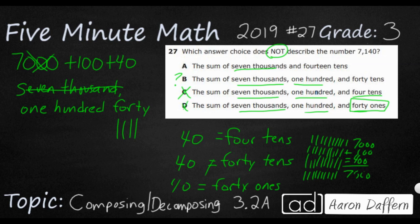The only one left to double-check is A: 7,000 and 14 tens. Counting by tens: 10, 20, 30, 40, 50, 60, 70, 80, 90, 100, 110, 120, 130, 140. So 14 tens does equal 140, which means A is correct. Therefore, my answer is B — that does not equal 7,140.